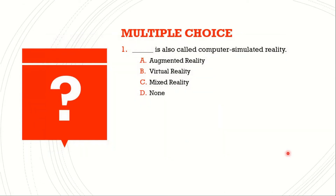Question number one. Blank is computer simulated reality. A. Augmented reality. B. Virtual reality. C. Mixed reality. D. None of the above. The answer is virtual reality.